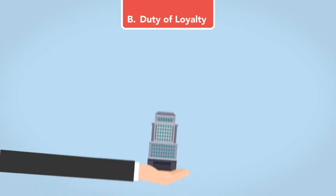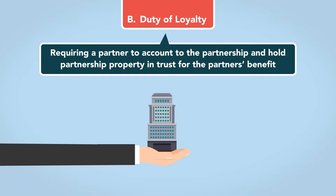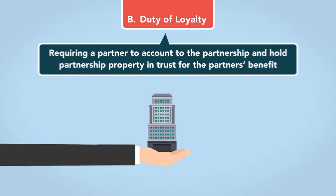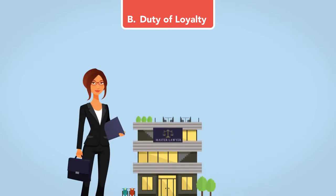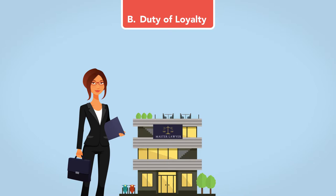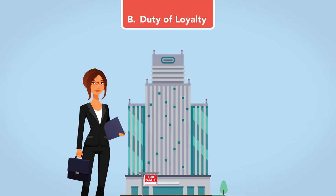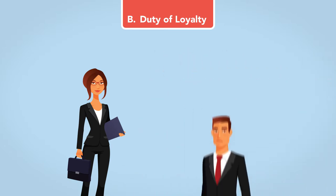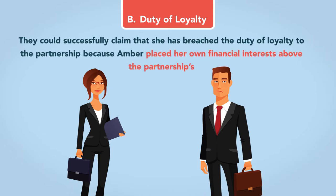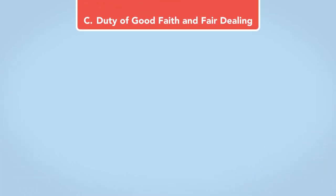The second is a duty of loyalty, requiring a partner to account to the partnership and hold partnership property in trust for the partnership's benefit. Additionally, the partner must place the success of the partnership above personal interests and should avoid any conflicts of interest between partnership duties and personal activities. For example, assume that Amber is a law partner in a firm. She knows the firm is looking to rent a bigger office and she finds a building for sale suitable to serve as the new office. Instead of letting her partners know, Amber purchases the building as a personal investment. If her law partners find out, they could successfully claim that she has breached the duty of loyalty because Amber placed her own financial interests above the partnership's.